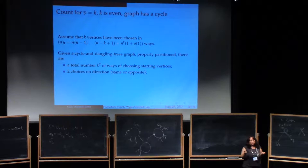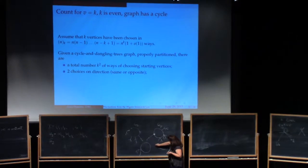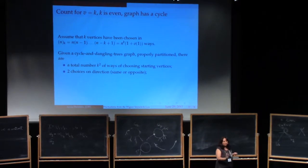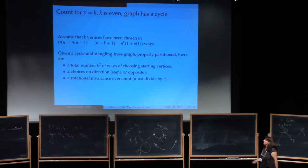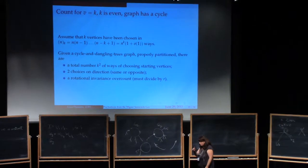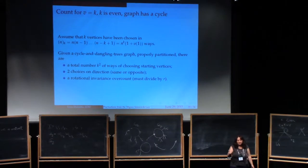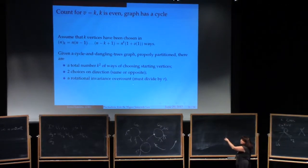You'll have two choices on how you walk on these things. You could start walking this way, or you could start walking this way. And they will give you different terms, different combinations, different pairs wi, wj. But you have to also take into account a rotational invariance of the cycle. So you'll get the same picture just by rotating the cycle. So there's an overcount. So these two are multiplicative, and this one is division. It's a dividing factor.